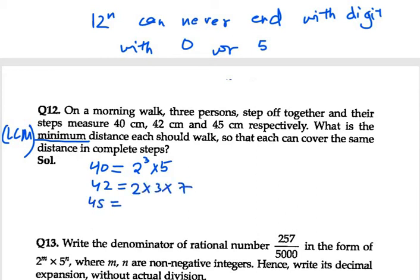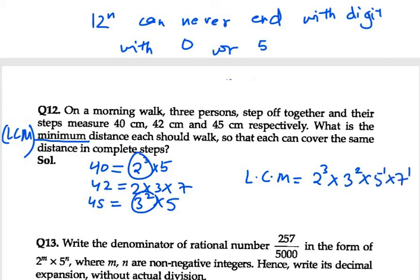45 can be written as 3 square into 5. Now we need to find LCM. LCM will be 2 raised to power 3 with the highest power in terms of 2. Then 3 square will be taken from here. Then we have 5 raised to power 1 into 7 raised to power 1.